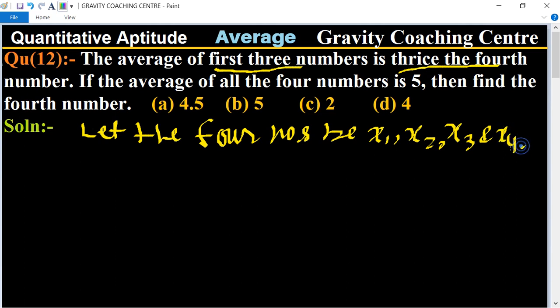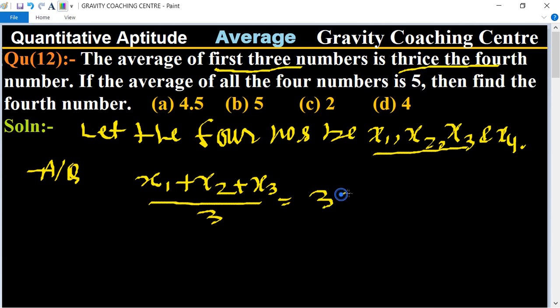According to the question, the average of first three numbers means (x1 + x2 + x3) / 3 equals thrice the fourth number, so 3x4. This implies that x1 + x2 + x3 equals 9x4.